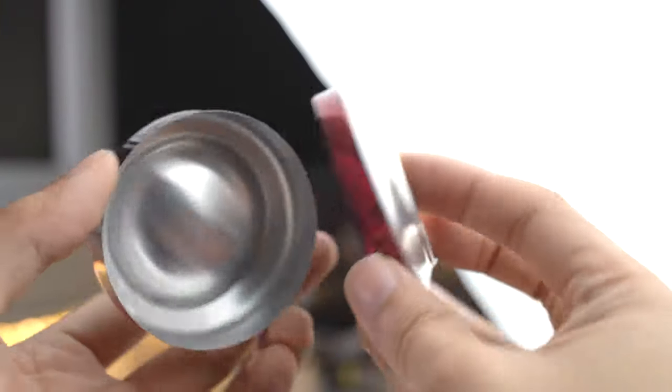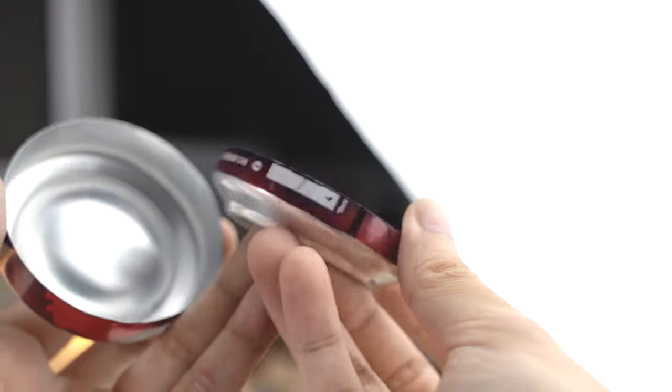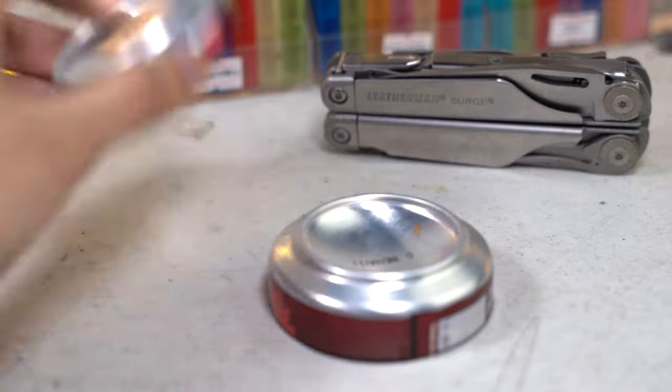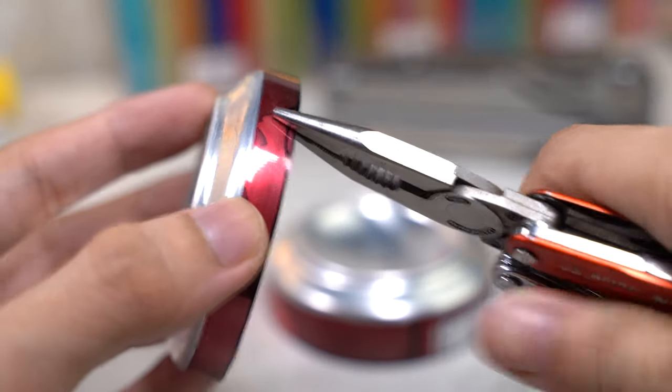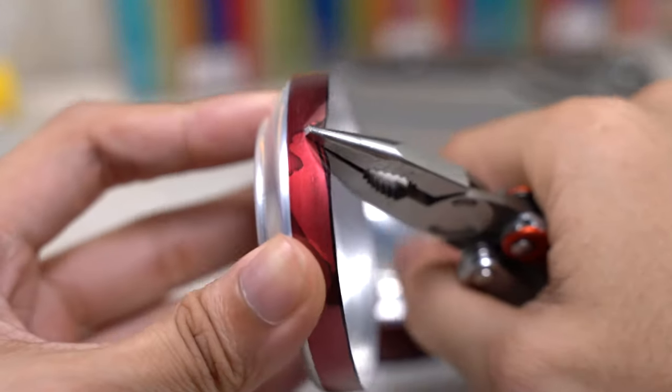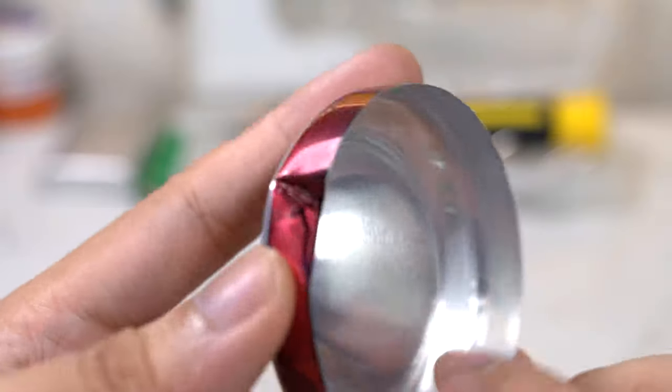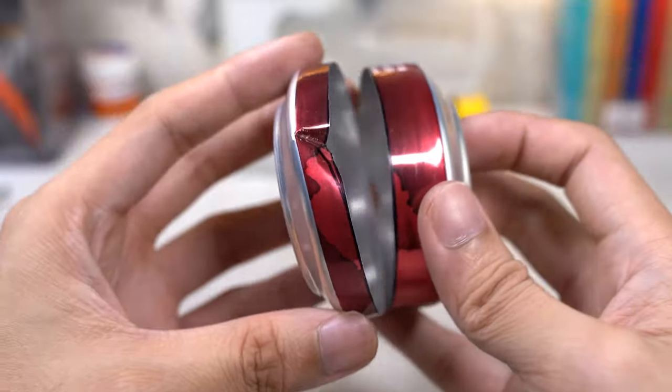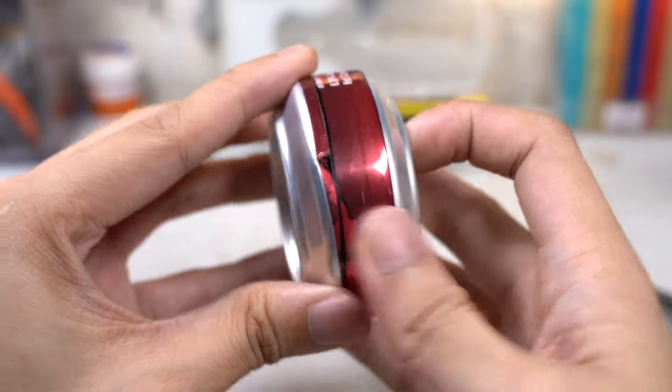Now you have two trimmed down soda cans, one slightly longer than the other. The goal is to combine them together, but doing so seems impossible. So you'll have to use the pliers from your multi-tool to bend the edge from the shorter can. This makes the combining process a lot easier. Once done, you can combine them together like an Oreo.